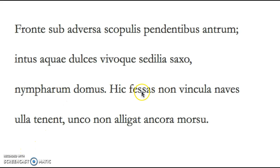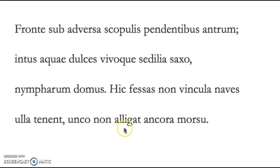'Hic fessas non vincula navis ulla tenent, unco non alligat ancora morsu.' Here no chains hold any tired ships — a little personification, since it's obviously the Trojans who are tired, not the ships. No anchor holds them with its curved bite. Basically Virgil is telling you how wild and untouched this place is: no docks, no anchors, no ships already docked. He's just painting a picture of how remote it is. And that is the lines — thank you for listening.